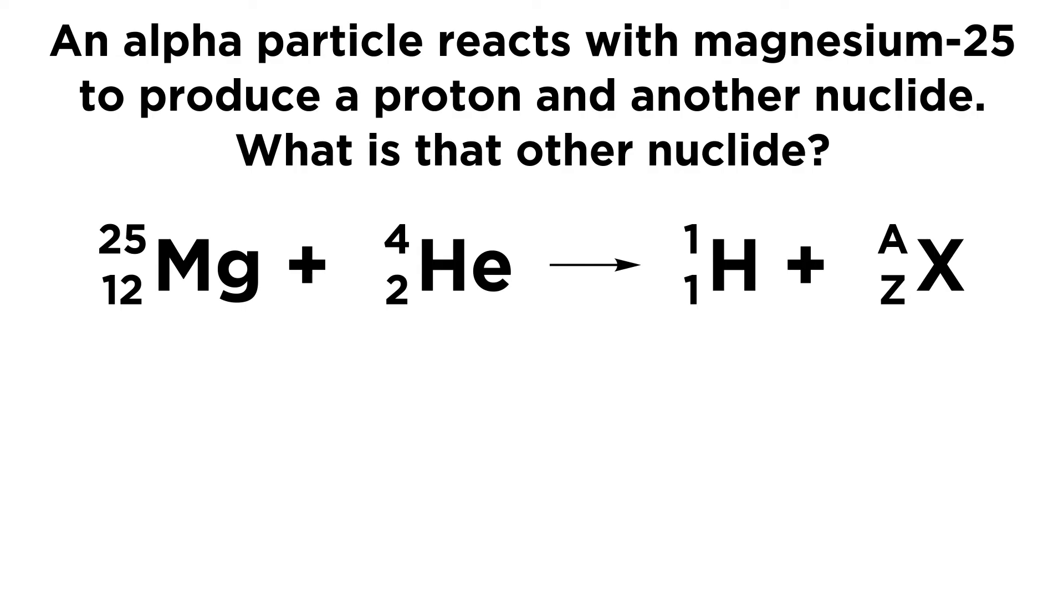So the atomic numbers and the mass numbers must be balanced. That means that the sum of the atomic numbers on the left side must equal the sum of the atomic numbers on the right side, and the sum of the mass numbers on the left side must equal the sum of the mass numbers on the right side.